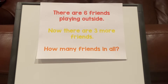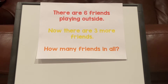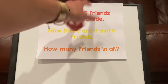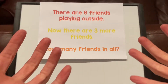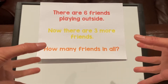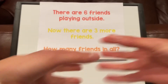Let me read it one more time. There are six friends playing outside. Now there are three more friends. How many friends in all? We need to find the total number of friends. So we have one group here that has six, and we have another group here that has three. We want the total, so we're going to put these groups together.